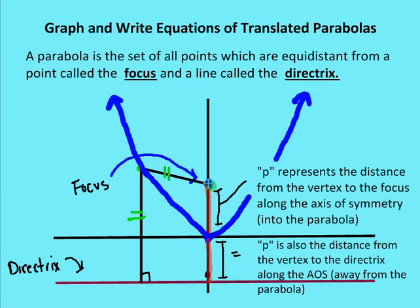If I find the focus, draw a line from the focus to the parabola, and then draw a line from the parabola to the directrix, those two segments would be equidistant. The distance between the vertex and the focus is your p-value. That p-value measures along the axis of symmetry from the vertex to the focus — the focus is inside the parabola. I can also find the directrix by measuring the same p-unit distance away from the vertex along the axis of symmetry, outside the parabola. The directrix intersects the axis of symmetry at a right angle, p units from the vertex.